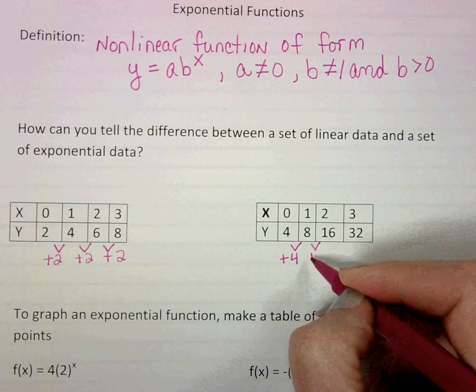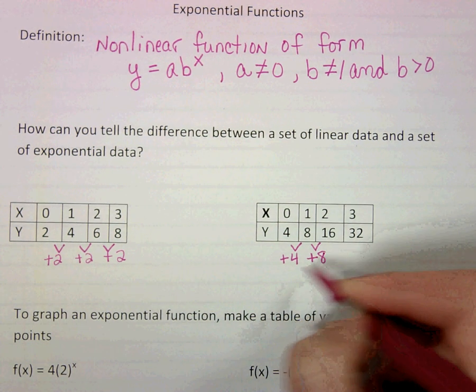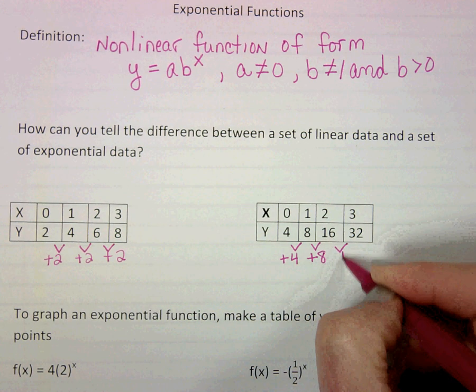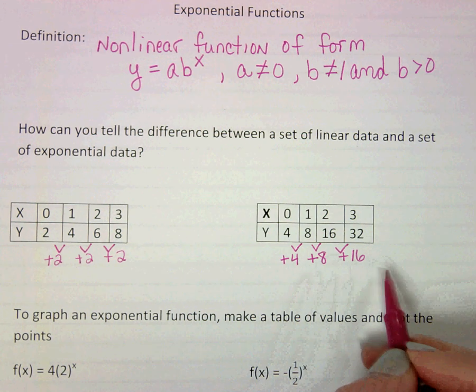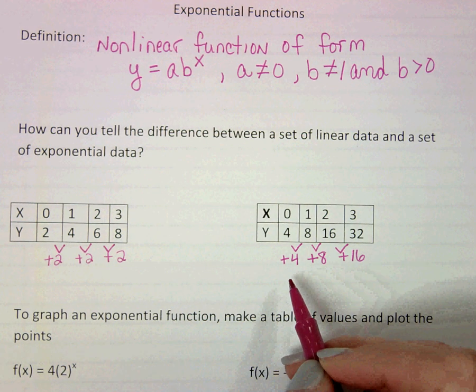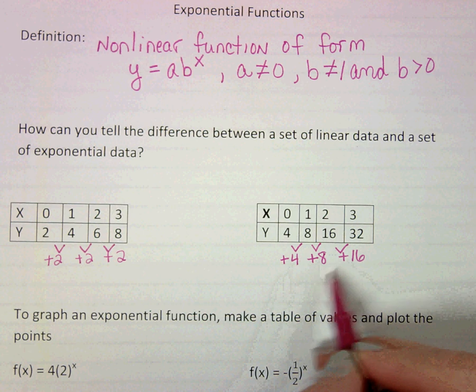8 to 16, we're adding 8. So even though here we're adding 16, even though there is a pattern, we're not doing the same thing every time. And so to identify this, we want to have the same occurrence here.